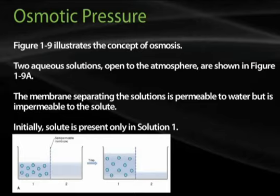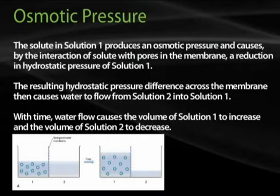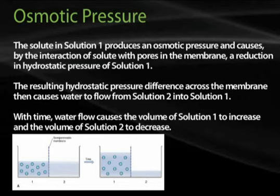Initially, solute is present only in solution 1. Solute in solution 1 produces an osmotic pressure difference and causes, by the interaction of solute with pores in the membrane, a reduction in the hydrostatic pressure of solution 1. The resulting hydrostatic pressure difference across the membrane then causes water to flow from solution 2 into solution 1. With time, water flow causes the volume of solution 1 to increase and the volume of solution 2 to decrease.